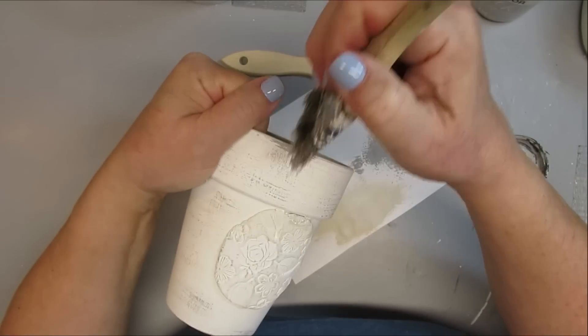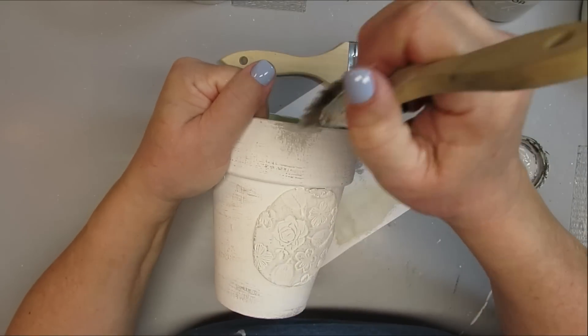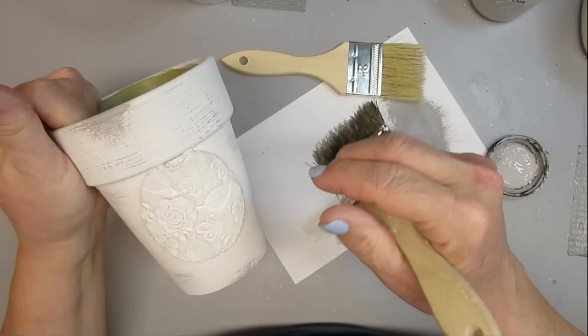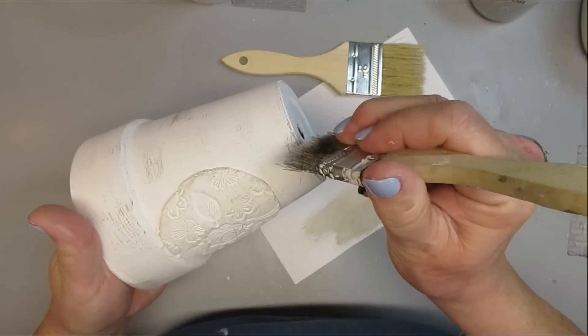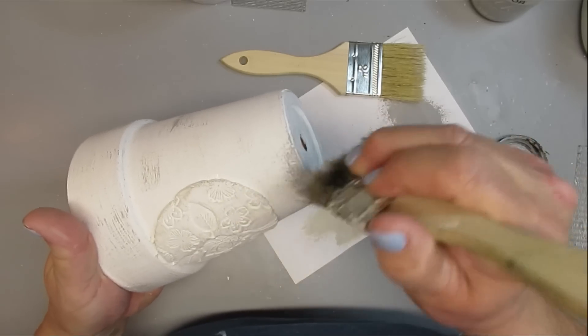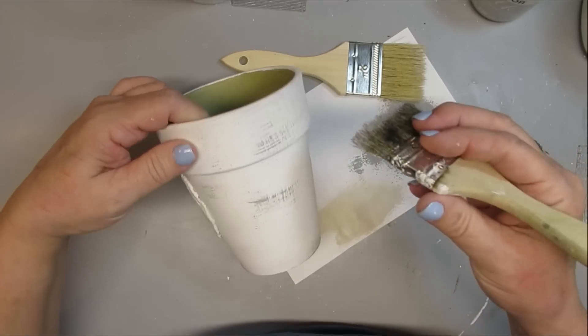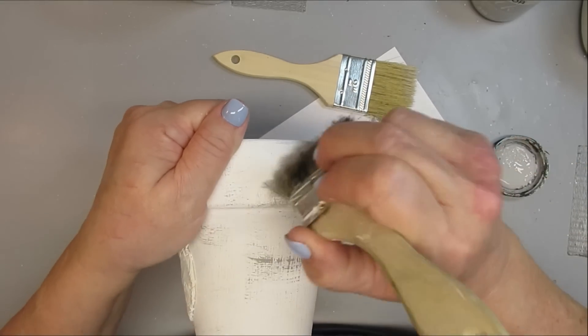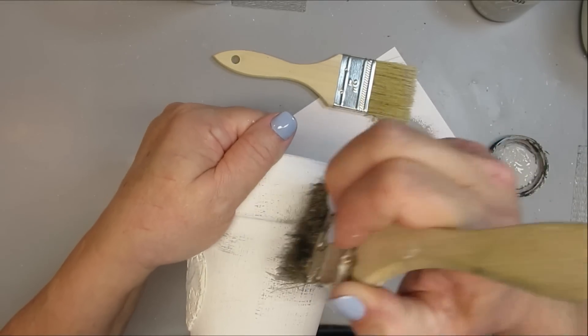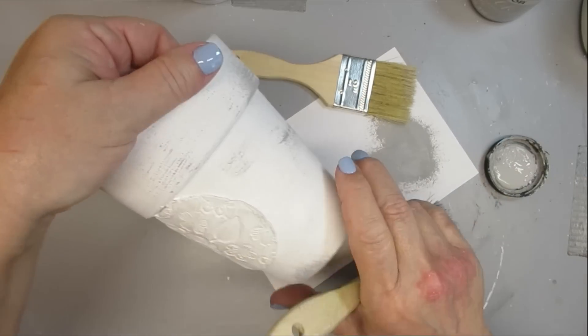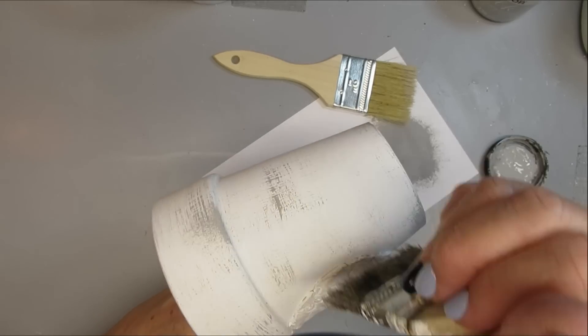Once I had the distressing the way I wanted it, I took the rough chip brush again and just started making little areas like this at the bottom, at the top, just so it would look like the paint has chipped off and worn even more than in the other areas. So you can do this or you cannot do this, it's totally up to you, but I just thought it would look really neat having some areas that were a little bit more distressed than the regular portion.